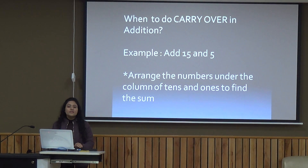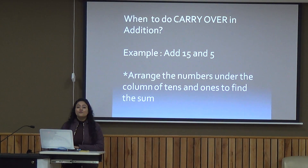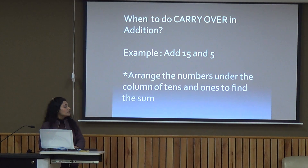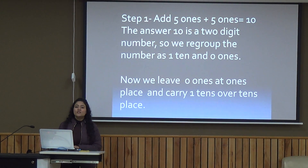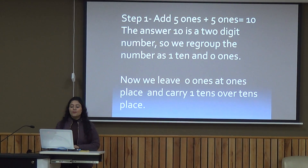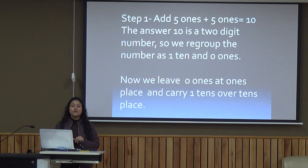Let's start with an example. Add 15 and 5. Arrange the numbers under the columns of tens and ones to find the sum. Step 1: add 5 ones plus 5 ones, that is 10. The number 10 is a two-digit number, so we regroup the number as 1 ten and 0 ones.